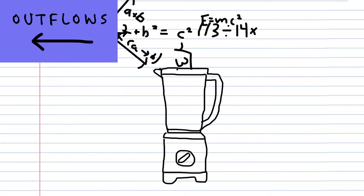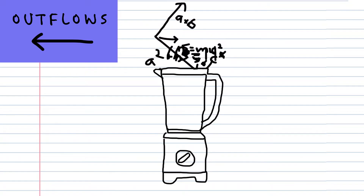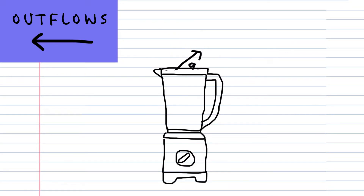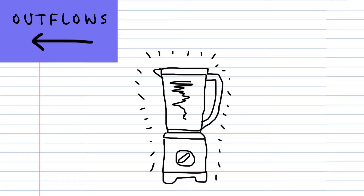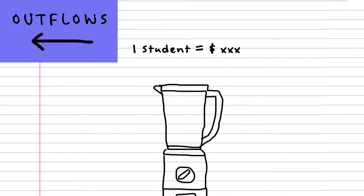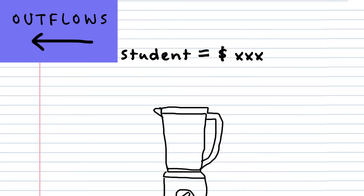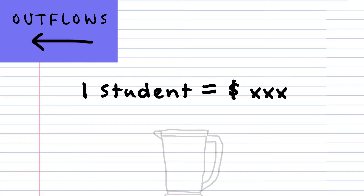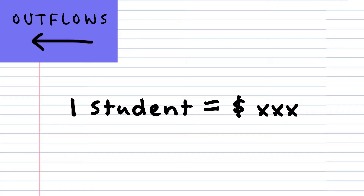So, Illinois puts all these factors into a mathematical blender to determine how much money is needed in this region of Illinois to provide kids with an adequate education.